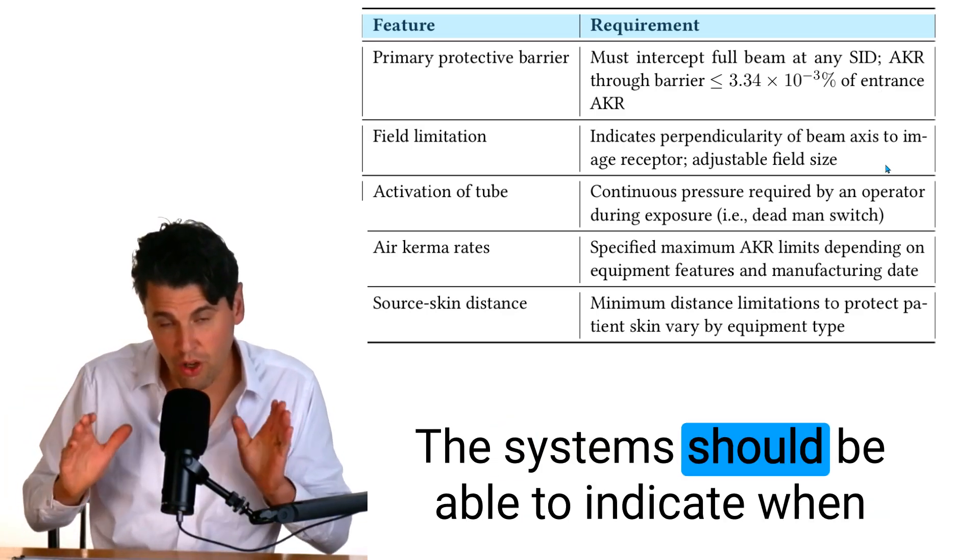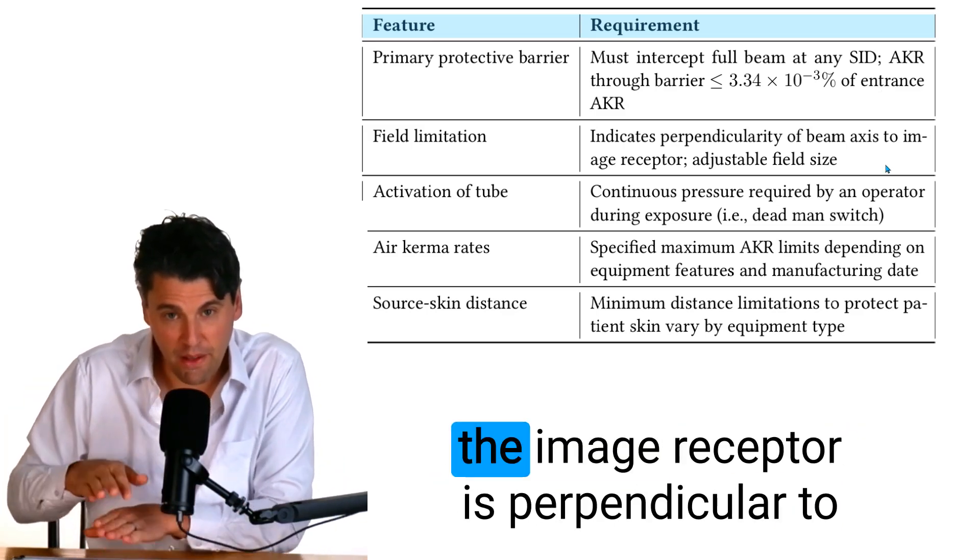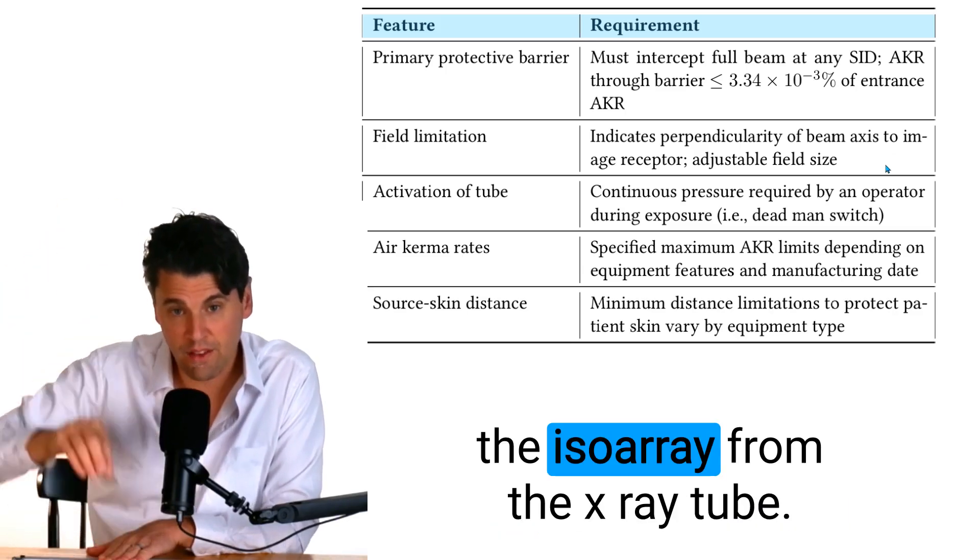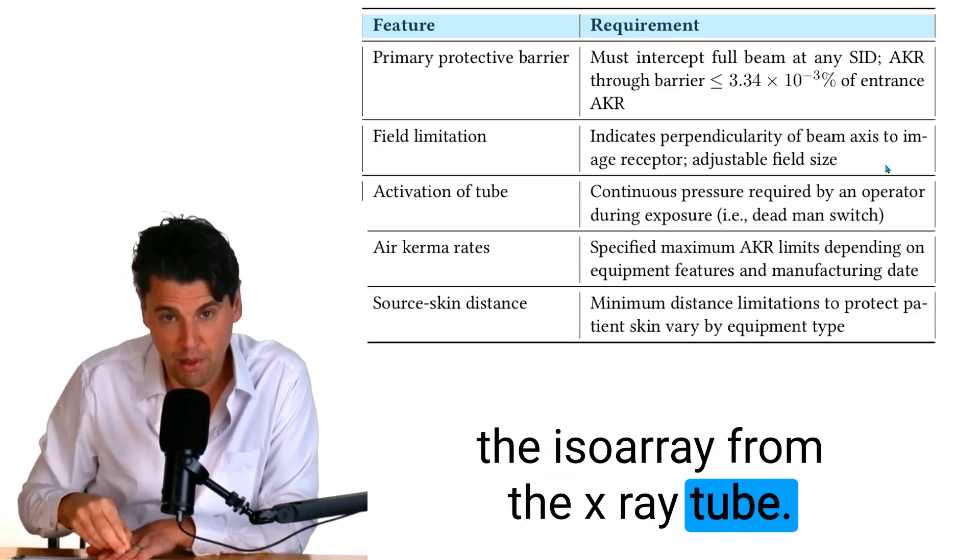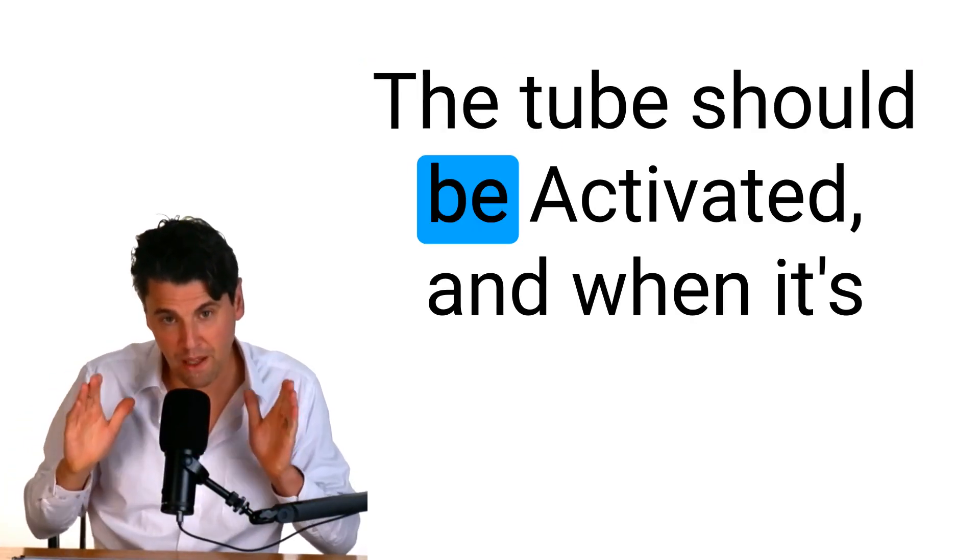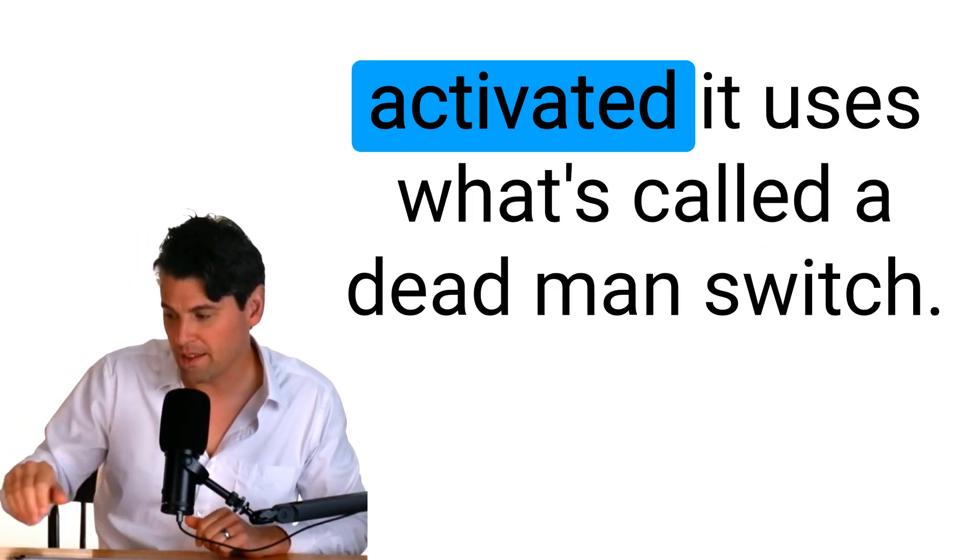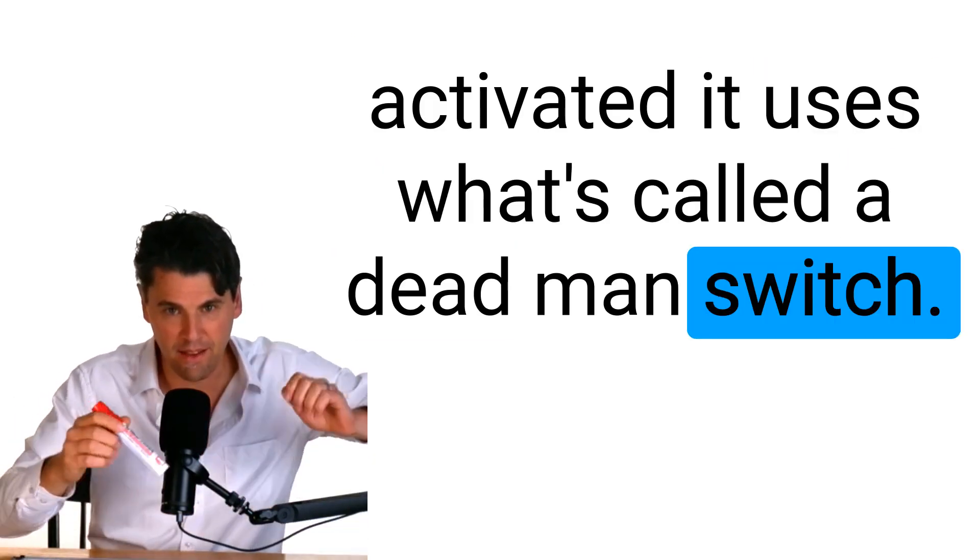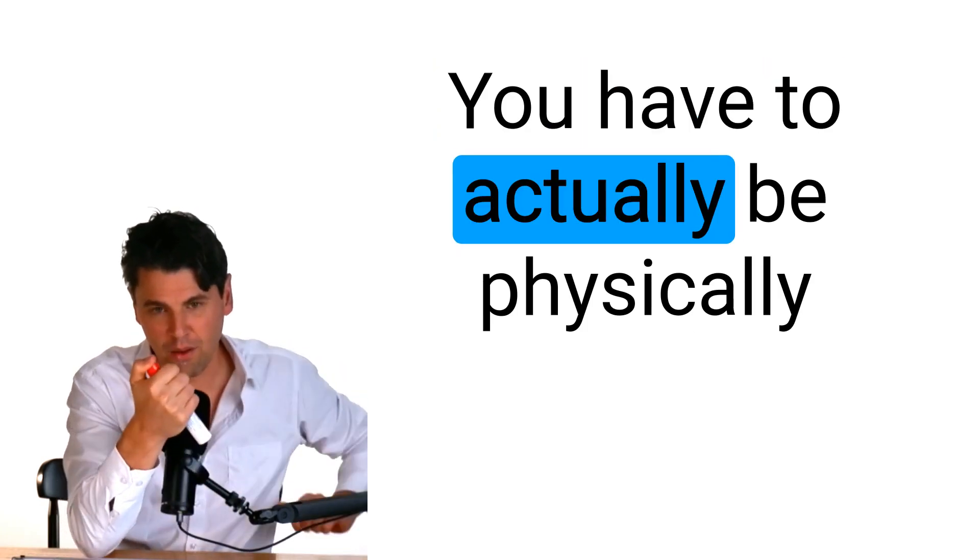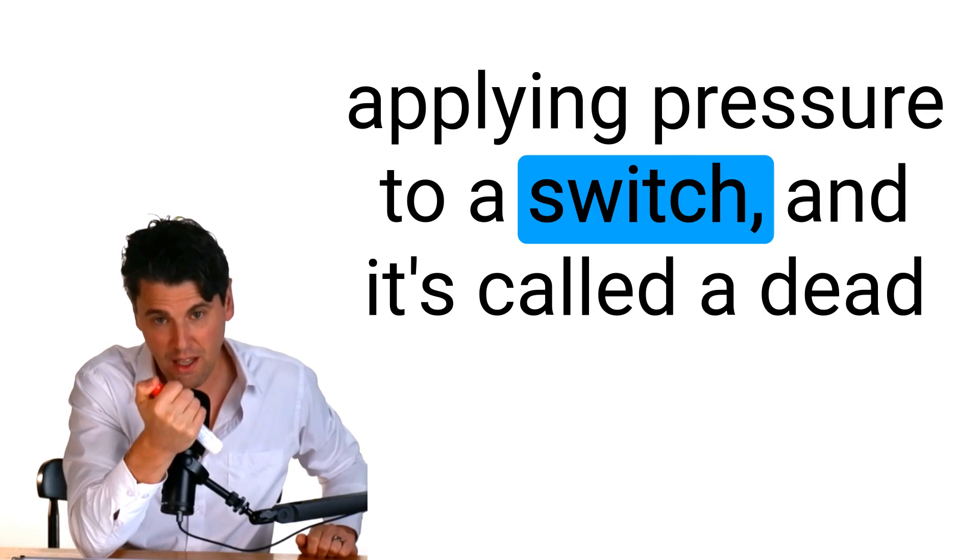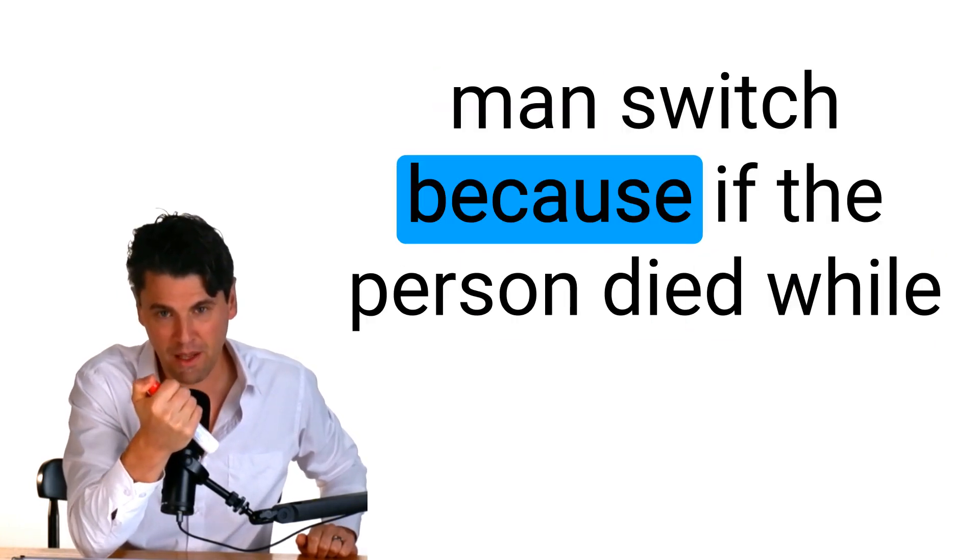The systems should be able to indicate when the image receptor is perpendicular to the iso ray from the x-ray tube and you also should be able to change the field of view. The tube should be activated and when it's activated it uses what's called a dead man switch.